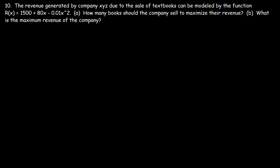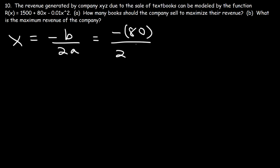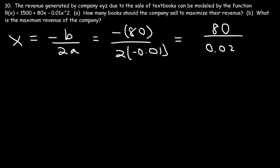The last question: the revenue of company XYZ from textbook sales is modeled by R(x) = 1500 + 80x − 0.01x squared. Part A: how many books should be sold to maximize revenue? This is the x-coordinate of the vertex: x = negative b over 2a, where b = 80 and a = −0.01. The two negatives cancel, giving 80 divided by 0.02, which equals 4,000. The company should sell 4,000 textbooks to maximize revenue.